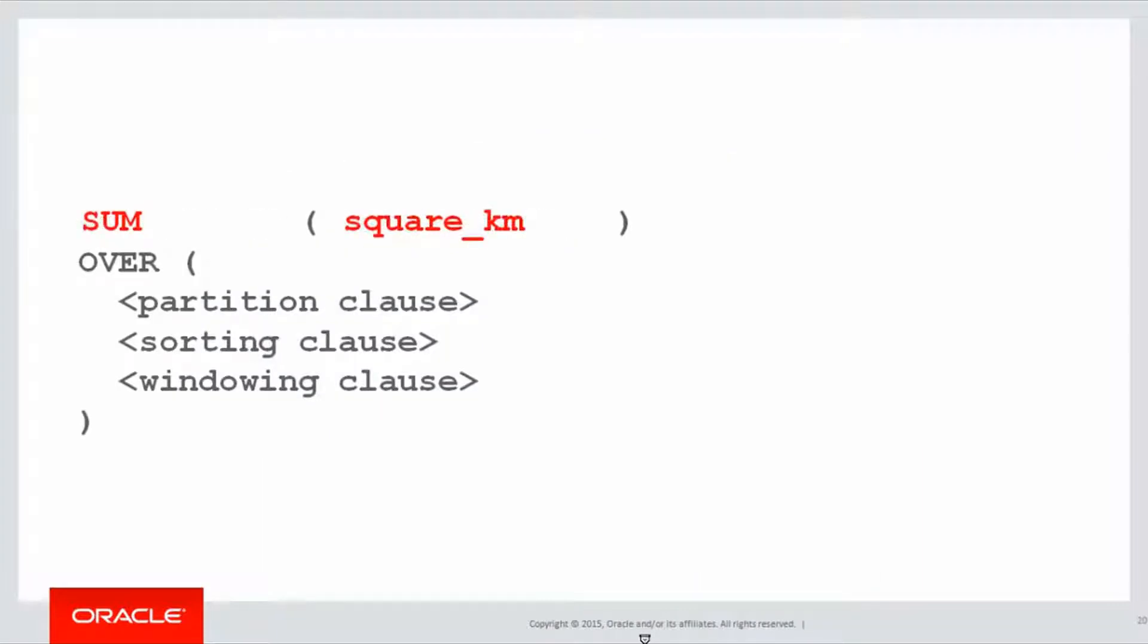First of all, we're once again summing up the square kilometres of ocean. This time we have a partition clause, because the requirement said partitioned by each particular type of ocean. We have a sorting clause as before. This time, remember the statement was across three rows.